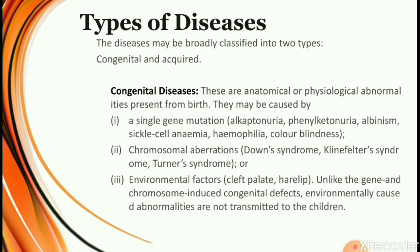Diseases can be classified into different categories, but on the basis of their occurrence, they can broadly be classified into two types: congenital diseases and acquired diseases.